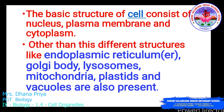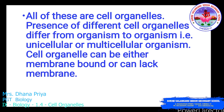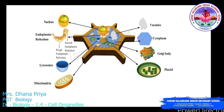The basic structure of a cell consists of nucleus, plasma membrane, and cytoplasm, which we discussed in a previous class. Today we are going to study other structures like endoplasmic reticulum, Golgi body, lysosome, mitochondria, plastids, and vacuoles. The presence of different cell organelles differs from organism to organism — plant cell versus animal cell — and also between unicellular and multicellular organisms.